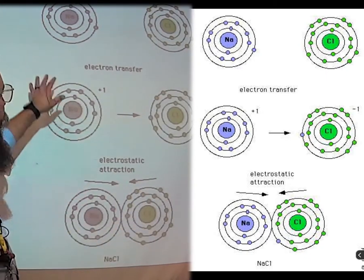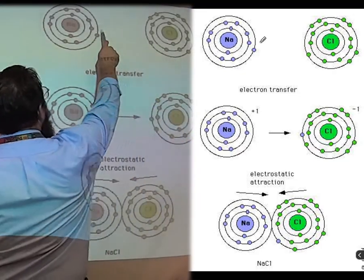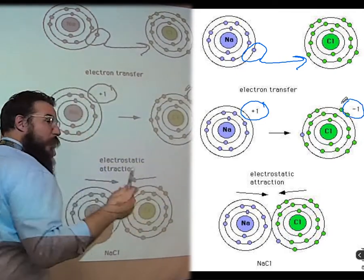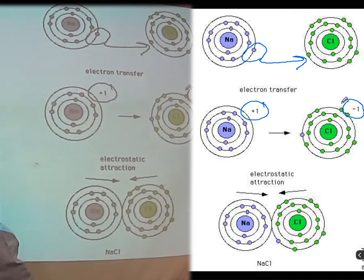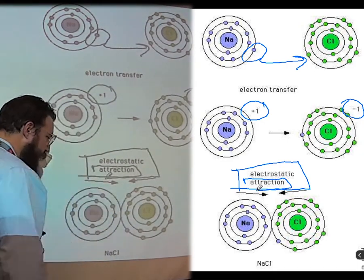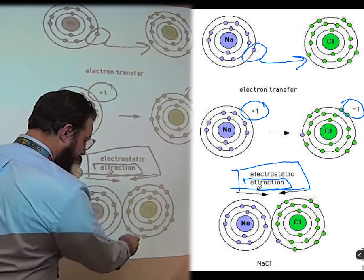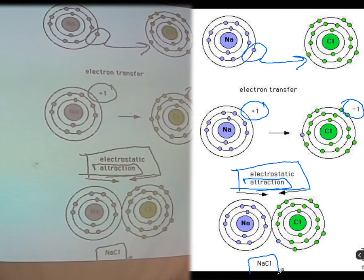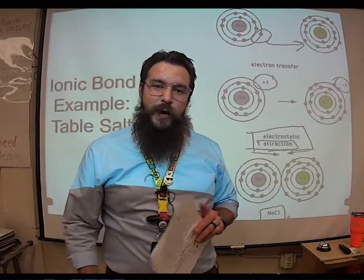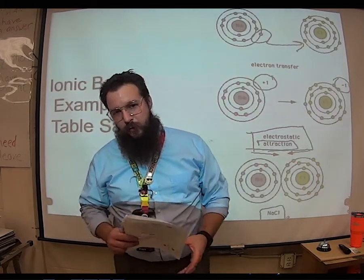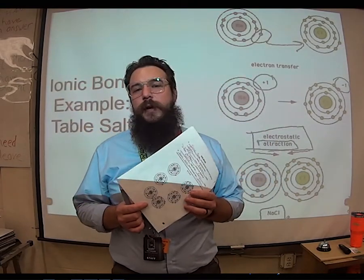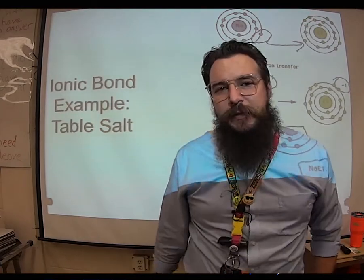Make sure you label these bonds in your notes. Show this electron getting sent over there, making a plus one charge here and a minus one charge there. Make sure you label your charges. That causes an electrostatic attraction — you can just write that it causes an attraction. By the way, sodium and chlorine together is NaCl, which is table salt. You should label your notes with 'table salt' — that's my top secret evil check to make sure you actually watched the video.